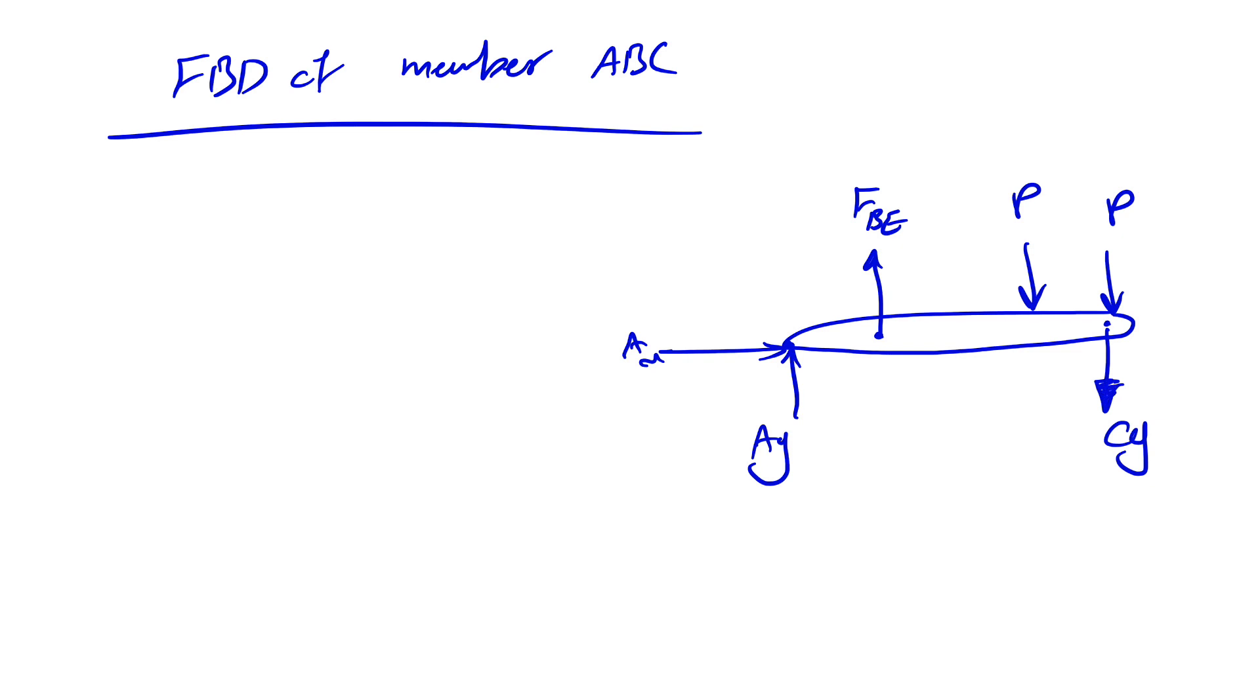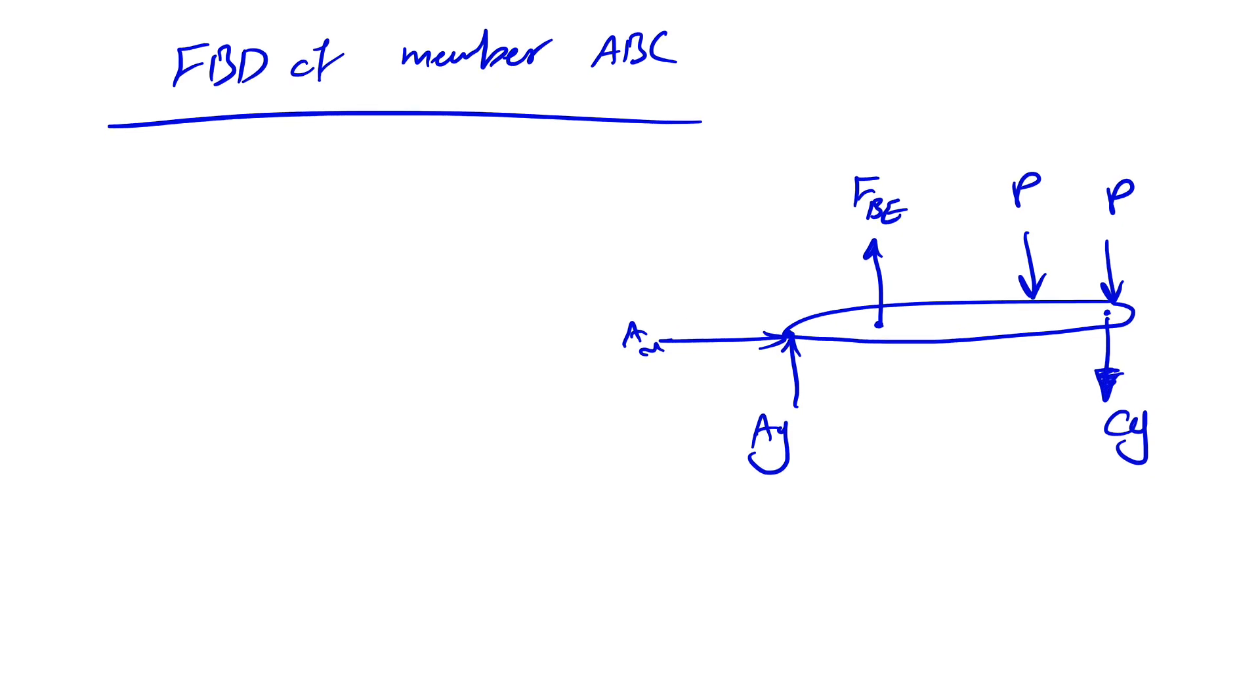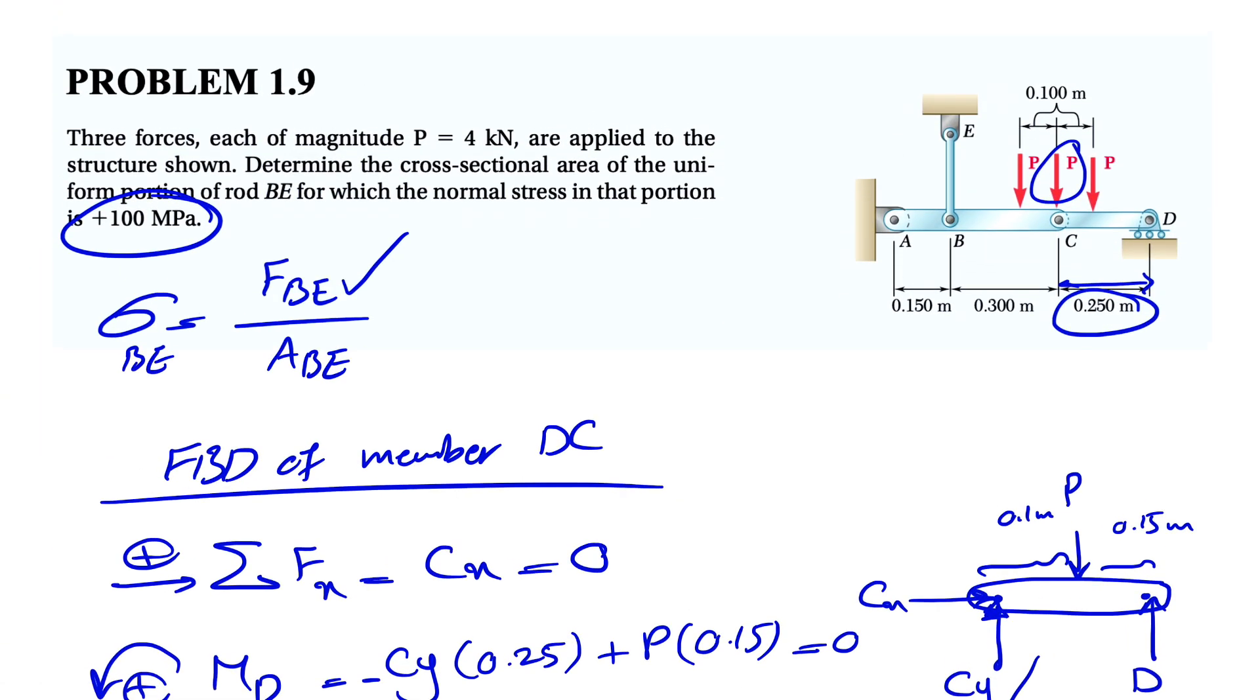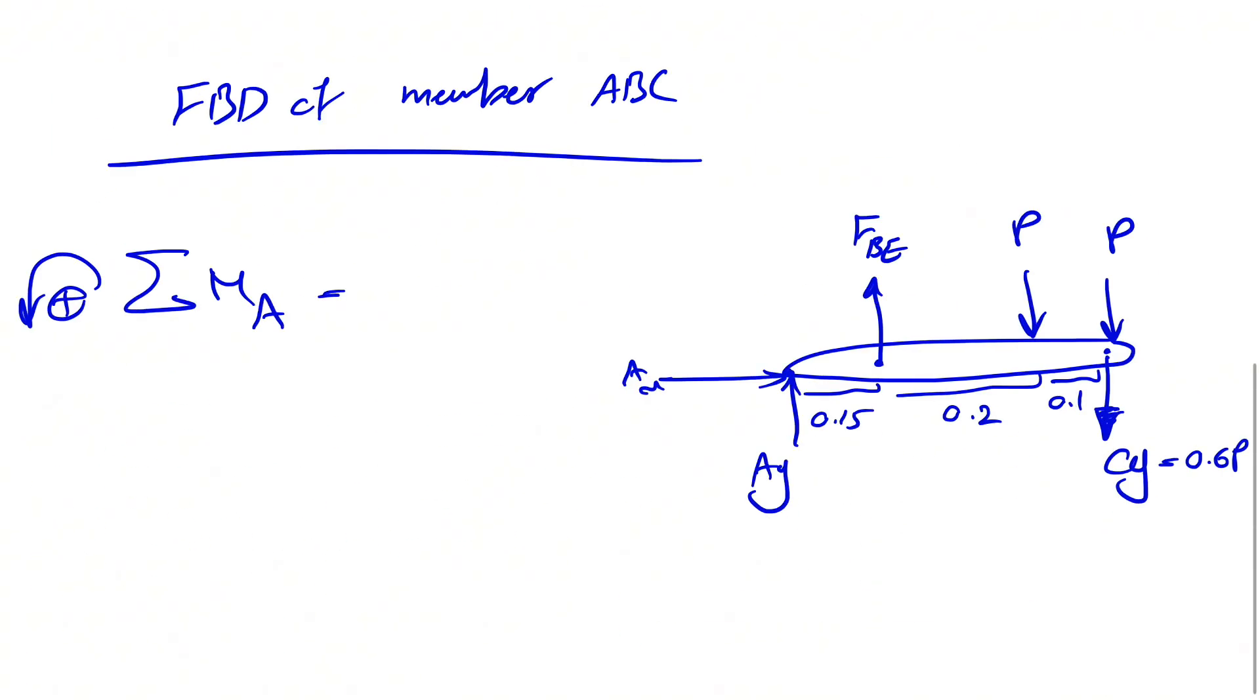All we need to do here—the only unknown we have in this question—we also found Cy based on P, and we already know that P is 4 kilonewtons. If we do the moment about point A, we can cancel out all the unknowns at point A and we can easily find FBE. Let's figure out the distances. Here we have 0.15, we have 0.2 here, and this distance would be 0.1. This is 0.15, we have this distance here 0.3 minus, so this will be 0.1, and the whole is 0.3, which means this is 0.2.